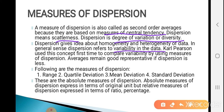Carl Pearson, one of the statisticians, used this concept first to compare variability using the measures of dispersion. The average remains a good representative if the dispersion is less. If the variability in the data is less, then the quality is good — that means the average is a good representative of our data.